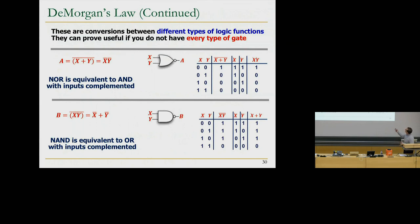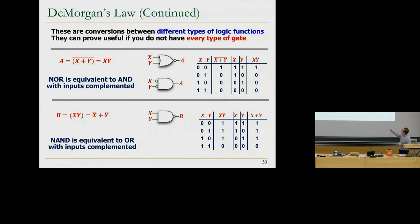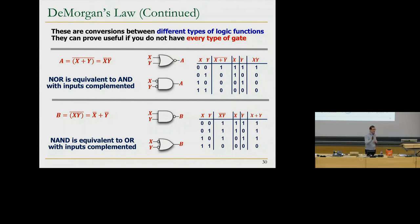These are conversions between different types of logic functions — useful if you don't have a certain gate, or if one gate is faster than another. NOR is equivalent to AND with inputs complemented; NAND is equivalent to OR with inputs complemented. If for some reason NOR is faster than NAND, and you want to build a circuit out of fast components, you'd convert everything to NOR gates using De Morgan's Laws. They enable you to transform one circuit type to another.